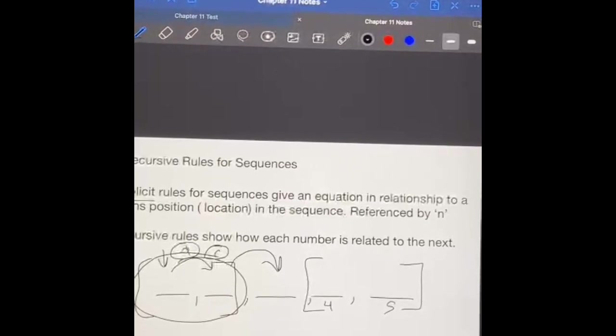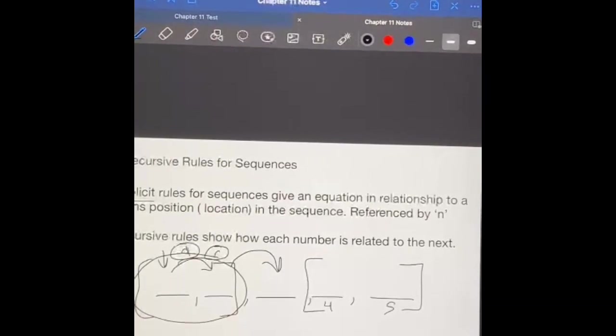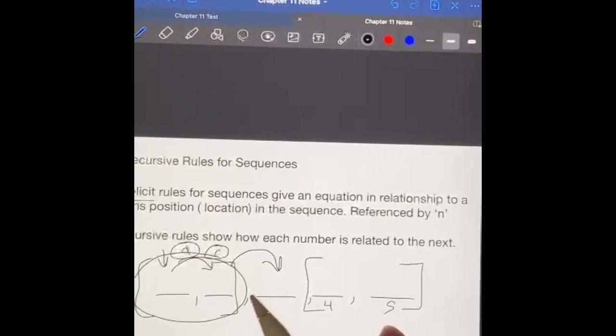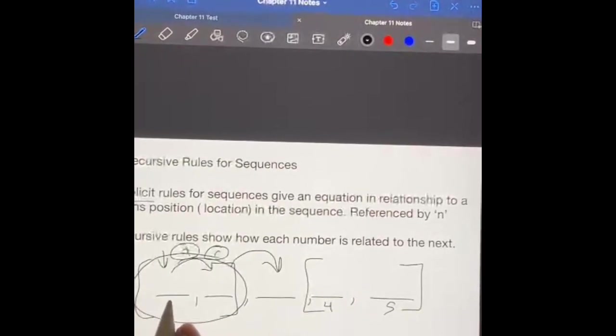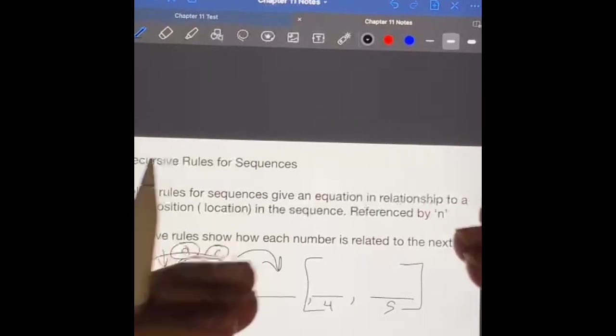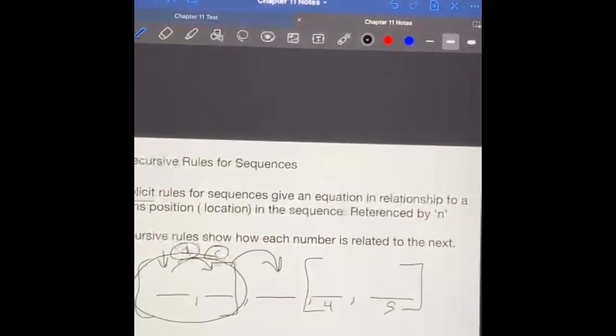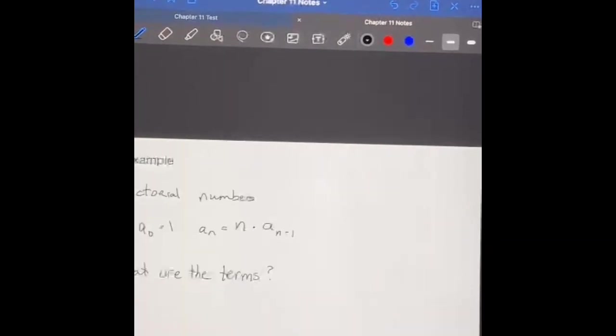So recursive rules give us an opportunity to have more complicated sequences along the way, but they, instead of starting at the first term, address a section. Each section, how do I get from this one to the next?